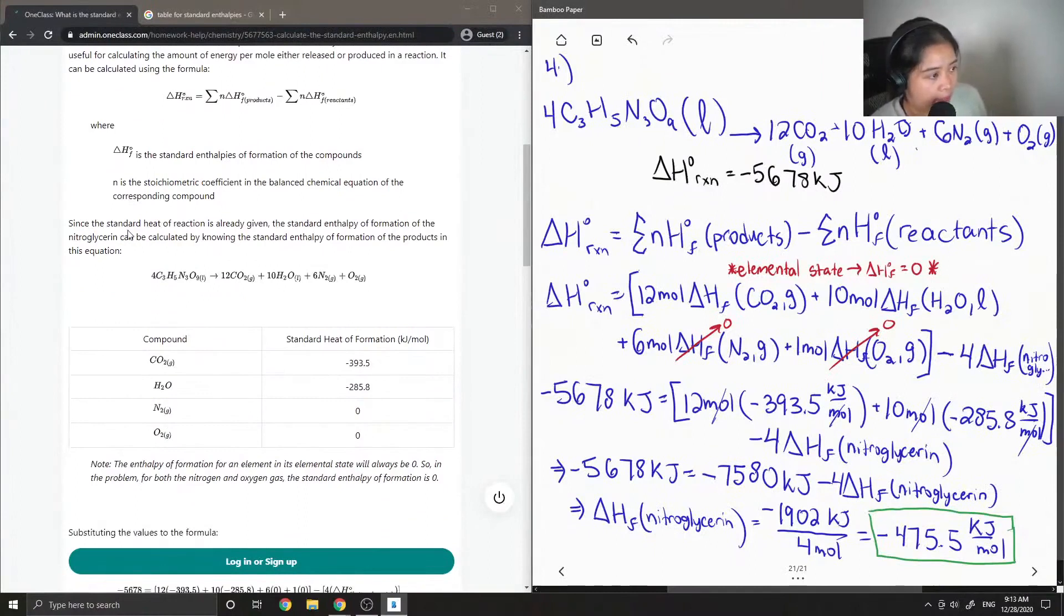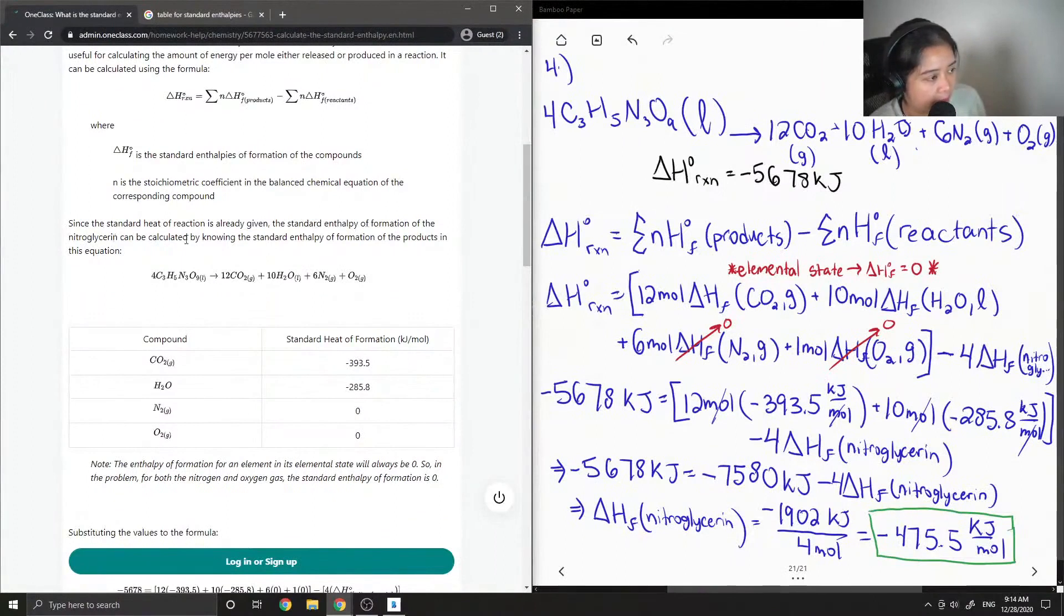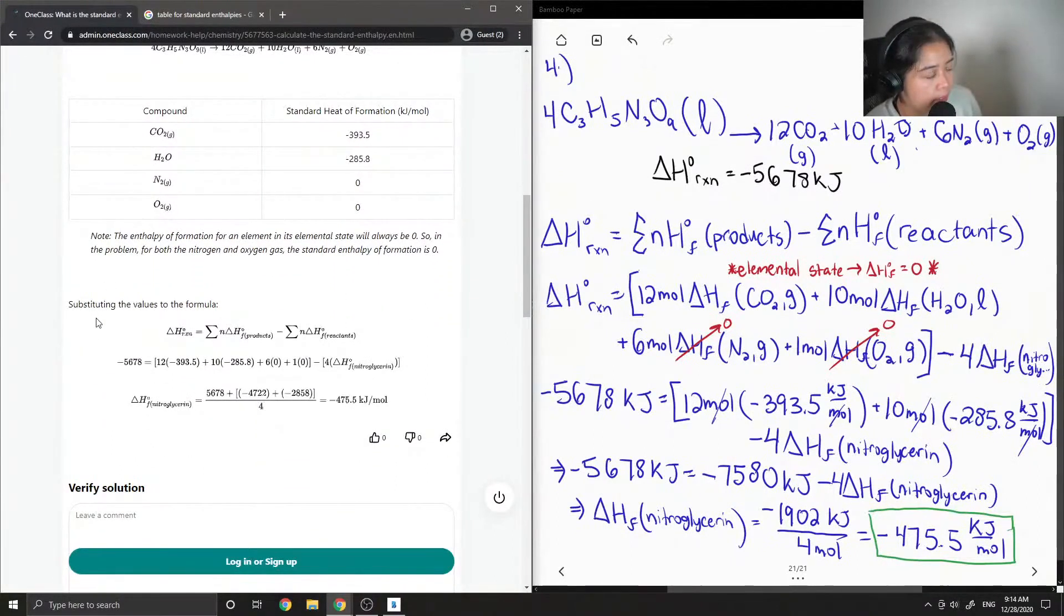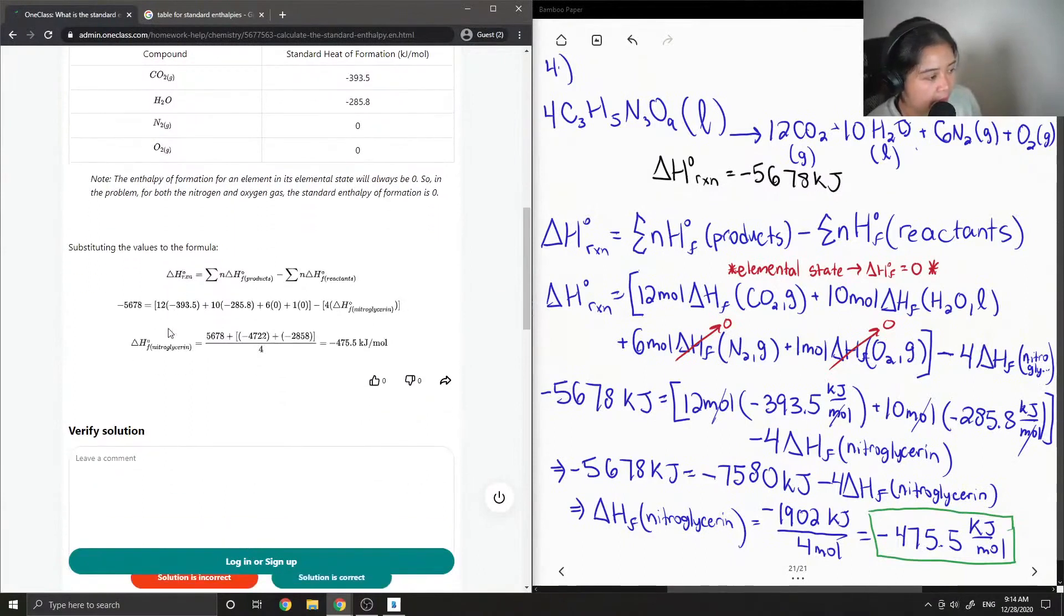Since the standard heat of reaction is already given, the standard enthalpy of formation of the nitroglycerin can be calculated by knowing the standard enthalpy of formation of the products in this equation. Okay, so they showed CO2 and H2O, and then they also showed that the enthalpy of formation for the elements in their elemental state will be zero. And then they substituted the values to the formula and ended up with negative 475.5 kilojoules per mole. Yep, so this solution is correct.